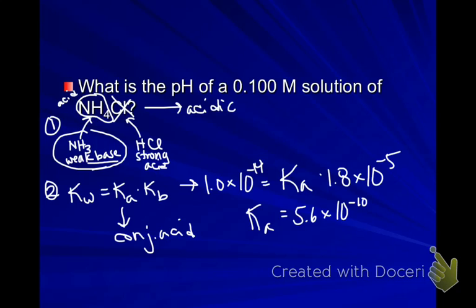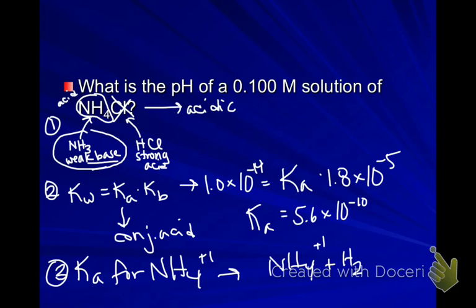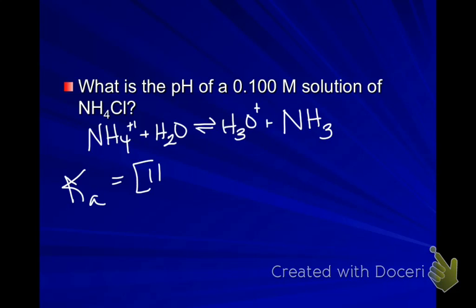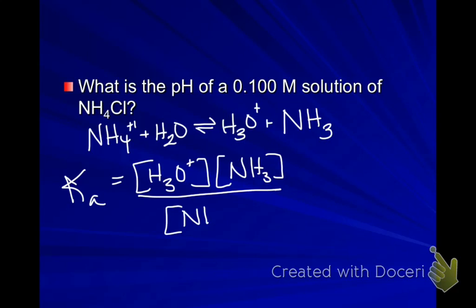So now I can plug in step 3, my Ka expression for NH4+. If I have NH4 acting as an acid, then it's going to donate a hydrogen to get H3O+ and its conjugate base is going to be NH3. So if I set up a Ka for this, I would want H3O+ times NH3, and that would all be divided by NH4+.